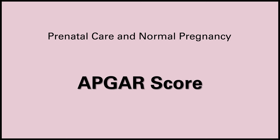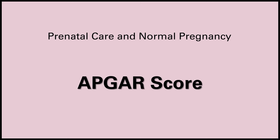A newborn scores two in Respiration if they have a strong cry, one if they have weak or irregular breathing, and zero if they are apneic. Newborns almost never come out scoring 10 on the APGAR scale — their heart and lungs are still adjusting, so it's really used for trending. We want to see the APGAR score increase from minute one to minute five. A score of seven or higher is normal and typically doesn't require any interventions. Three or less is critically low and the newborn requires resuscitation. Between three and seven, the score is low but consider trending — if the one-minute score is five but they pink up with stimulation or blow-by oxygen and the five-minute score is eight, they're trending upwards.